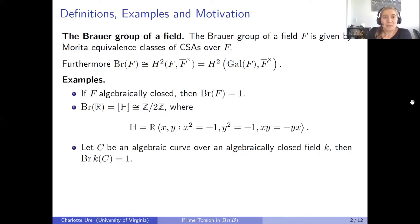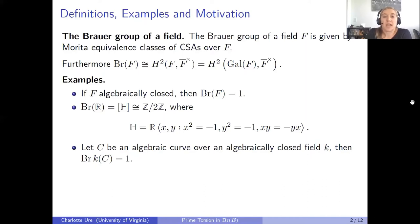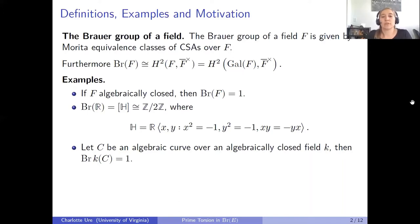Now let's go through some examples. Whenever the field F is algebraically closed, every central simple algebra is isomorphic to a matrix ring, so in this case the Brauer group is just trivial. Making things a little bit more interesting, you can look at the Brauer group of the real numbers.